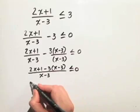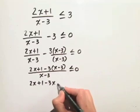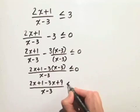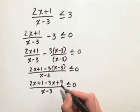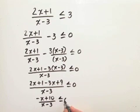Now we need to distribute and we have 2x plus 1 minus 3x plus 9 all over x minus 3 is less than or equal to 0. This simplifies to negative x plus 10 in the numerator over x minus 3 in the denominator is less than or equal to 0.